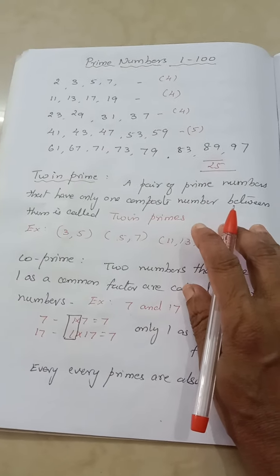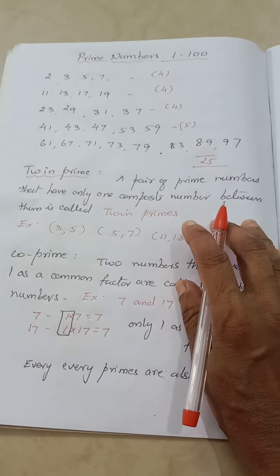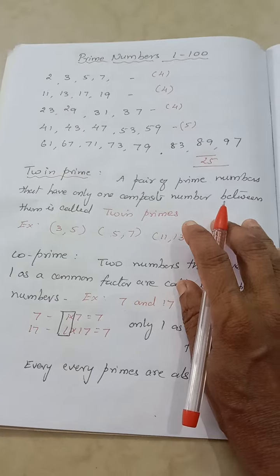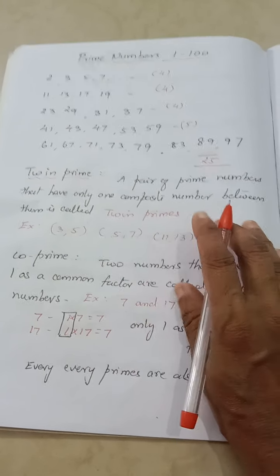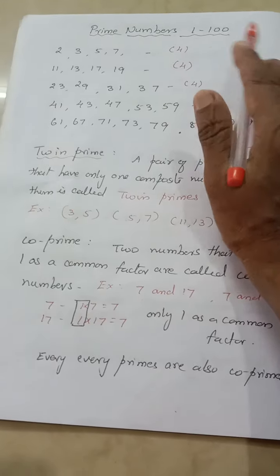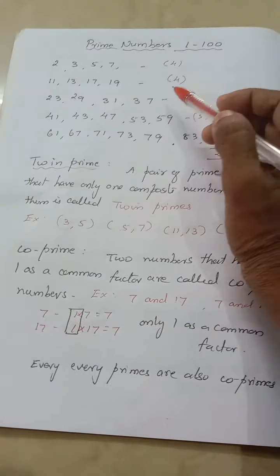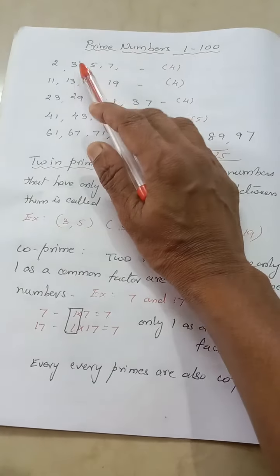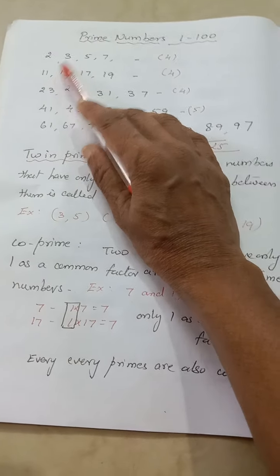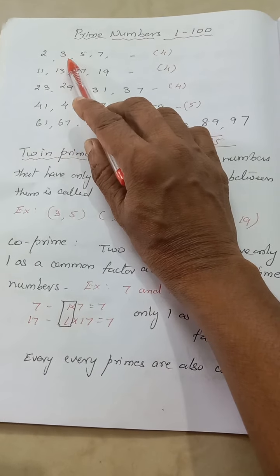Hello viewers, welcome to Showbuzz Math Corner. In this video we are going to learn about prime numbers 1 to 100. First let us see which are the prime numbers. The prime numbers up to 10 are 2, 3,